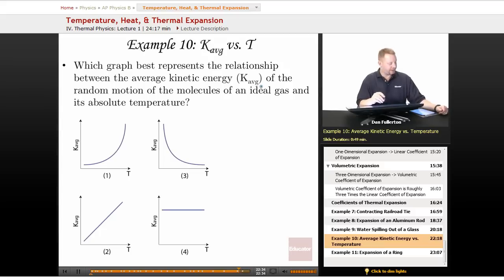Well, first of all, let's write down that relation. The average kinetic energy is 3/2, Boltzmann's constant, times T. Notice that we have a direct linear relationship between the average kinetic energy and the temperature.